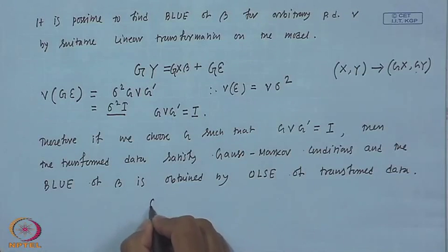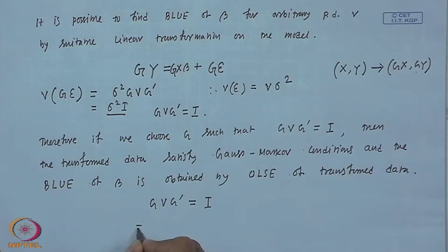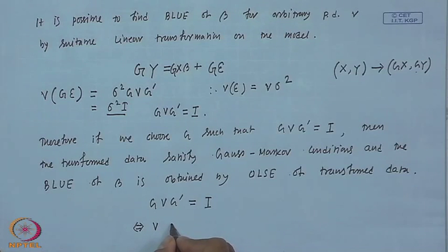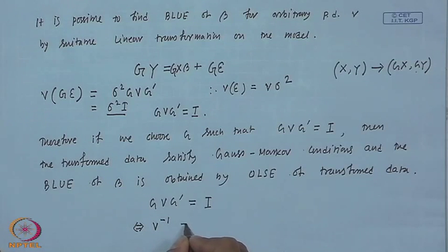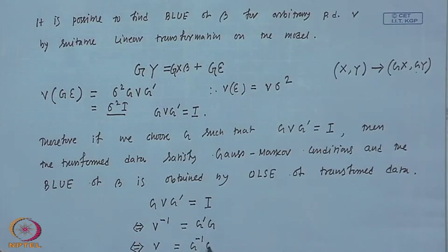The condition GVG' = I is equivalent to V⁻¹ = G'G, which is equivalent to V = G⁻¹(G')⁻¹.